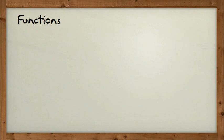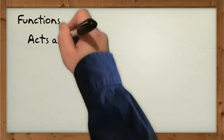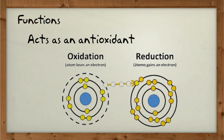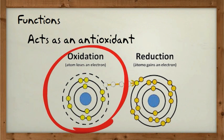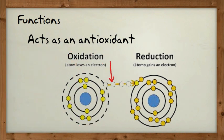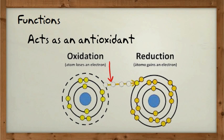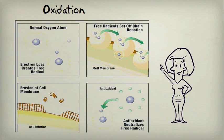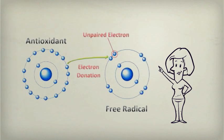Vitamin C has two main functions. It acts as an antioxidant, and antioxidants prevent oxidation, or the loss of electrons from substances called free radicals. Oxidation can happen, for example, to the phospholipids in our cell membranes. Vitamin C prevents this from occurring, which is why we call it an antioxidant.